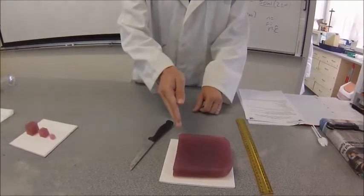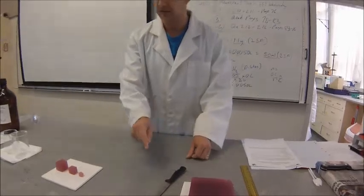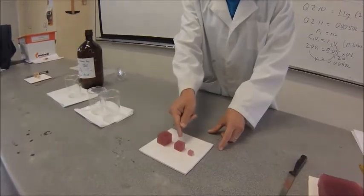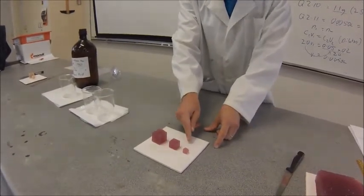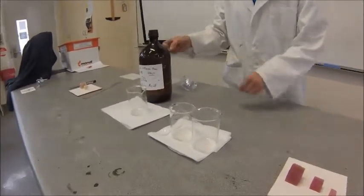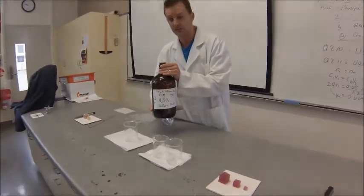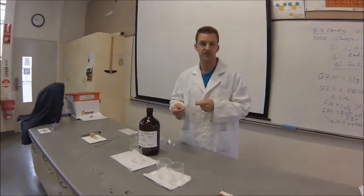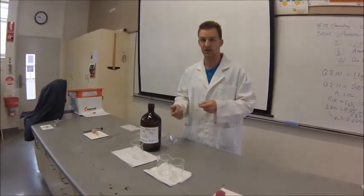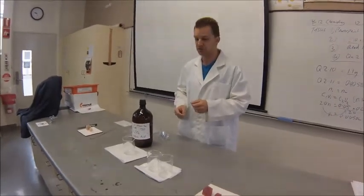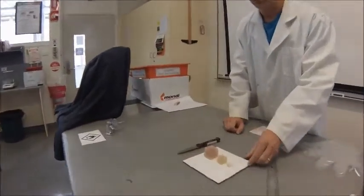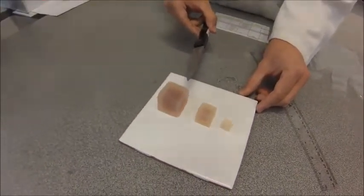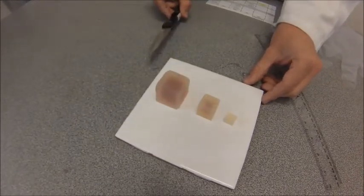You're going to use this to figure out how quickly diffusion occurs with different sized cubes. The first step is to cut the agar into cubes. Then you'll have a 3cm, 2cm, and 1cm cubic cube, and put them into beakers, adding 0.1 molar sulfuric acid. The acid will gradually diffuse into the cubes, neutralizing the base, and the indicator will turn clear — giving a color change that indicates how much diffusion has occurred.